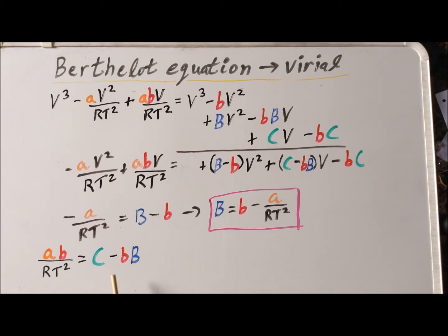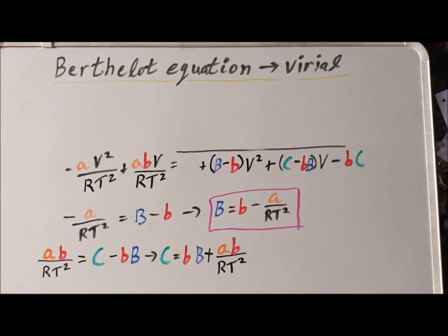We simply add little B times big B to each side. And we have an expression for C, which is equal to little B times big B plus A times little B divided by RT squared. And we can go even further because we have an expression for capital B. So in our final step, we're going to substitute this expression for capital B into our expression for capital C to solve.